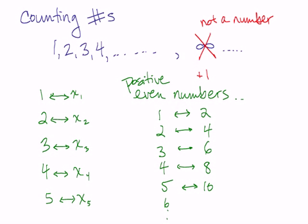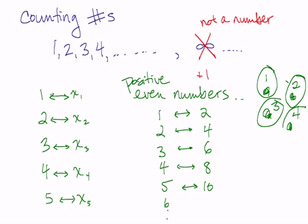Think about this from a finite set point of view. If you want to know how many things are in a finite set, what you do — say I have a bunch of doohickeys. Doohickey one, doohickey two, doohickey three. I am labeling them: this is number one, this is number two, this is number three, this is number four. There are four doohickeys. So I am making a one-to-one correspondence with the counting numbers in order. So if I said I had an infinite set of doohickeys, that means I can line them up: one, two, three, four, et cetera.